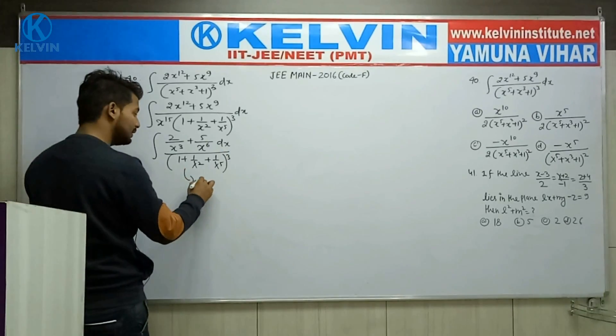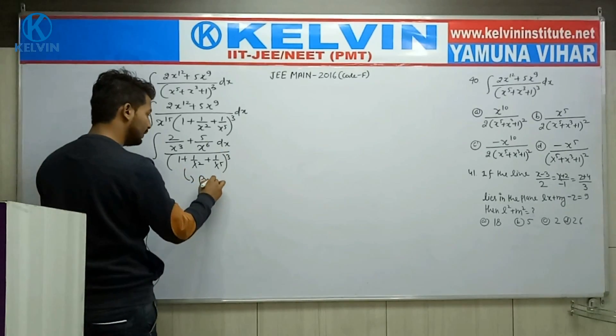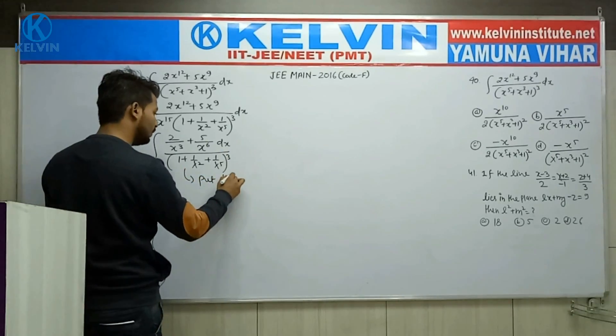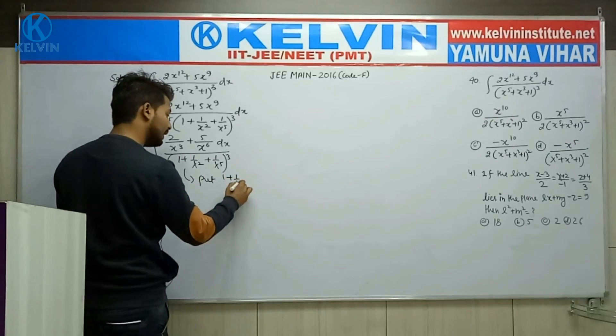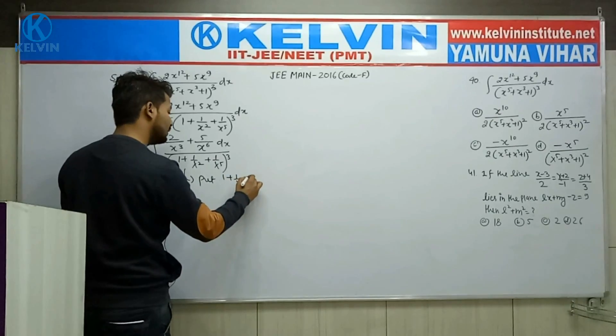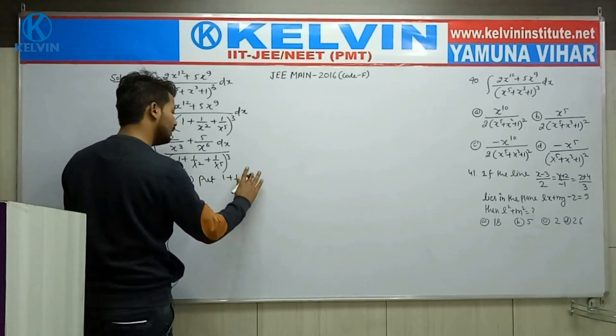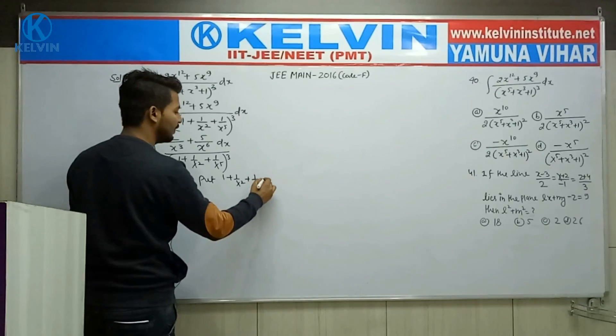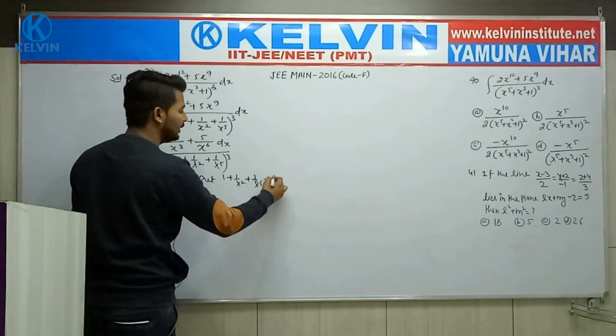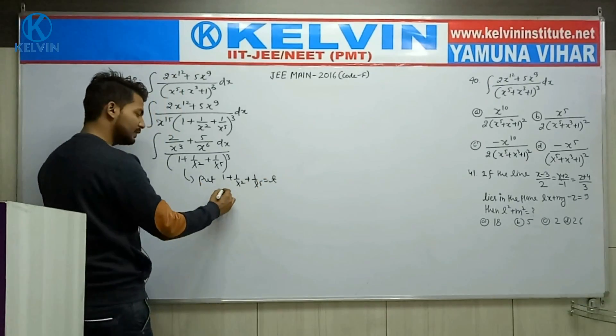Simply, this time if you put t equal to 1 plus 1 upon x square plus 1 upon x to the power 5, equal to t.